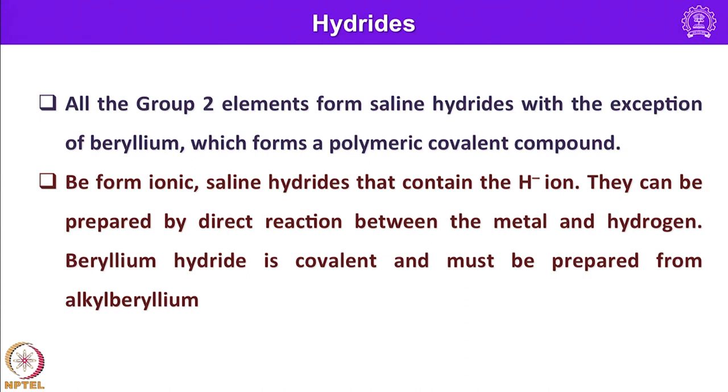The ionic hydrides can be prepared by direct reaction between the metal and hydrogen. Beryllium hydride is covalent and must be prepared from alkyl beryllium. Because of its covalent nature, it is very difficult to prepare starting from beryllium and hydrogen gas directly. It can be conveniently prepared in its purest form starting from alkyl beryllium.